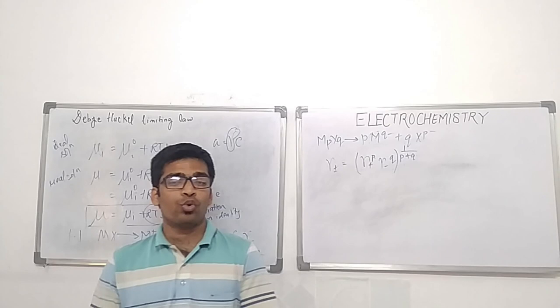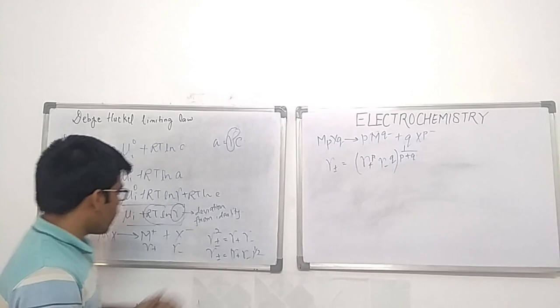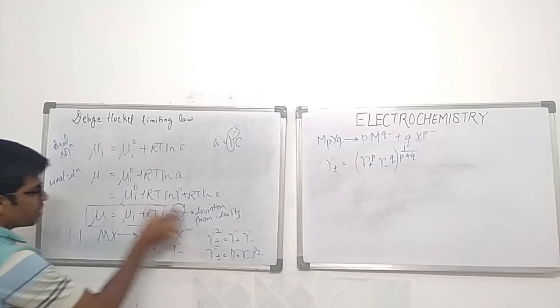The energy will increase or decrease depending on the kind of interaction occurring. We have seen that γ±, which causes the deviation from ideality, is related to chemical potential.